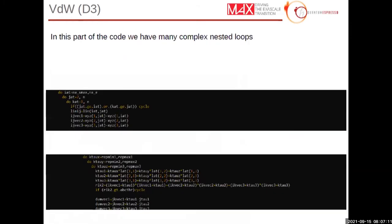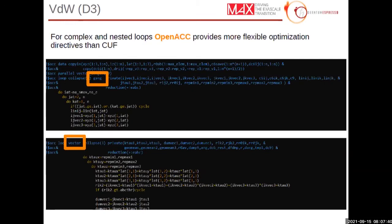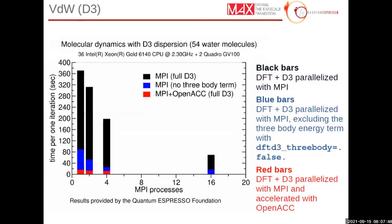Another area where we exploited OpenACC successfully was a part of the code with many complex nested loops — the dispersion term. This energy function depends on angles between atoms, requiring a triple loop over all unique triplets of atoms with parameter loading for each. The different levels of parallelism provided by OpenACC with gangs and vectors were very useful for optimizing performance. The black bars represent MPI-only parallelization, while the red bars show when OpenACC parallelization is added. This work was finalized during the hackathon in June and added to the July release.